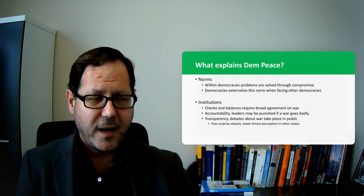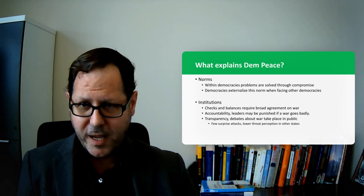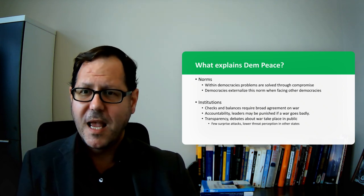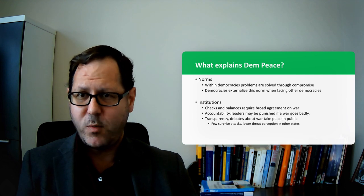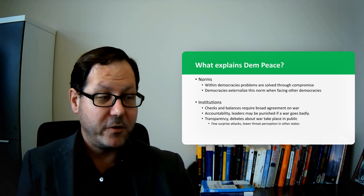When democracies encounter problems with dictatorships, democracies go into that mode of, okay, we'll sit down, we'll negotiate, we'll compromise. And dictators look at that and see weakness and just roll right over it or potentially press their advantage with military force.